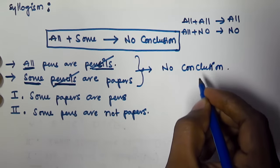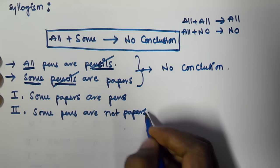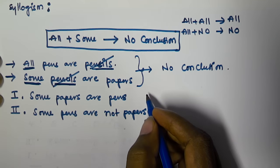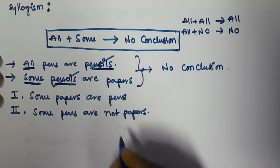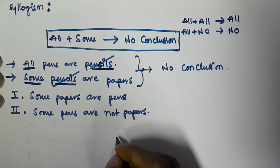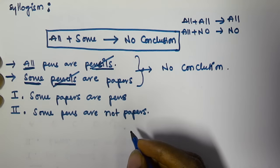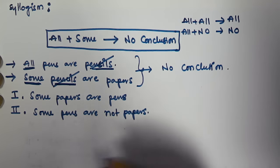So from the given two syllogisms we cannot conclude anything. If there are no conclusions, we cannot check the given two conclusions. So directly you can select option D, which tells that neither conclusion one nor conclusion two is true.